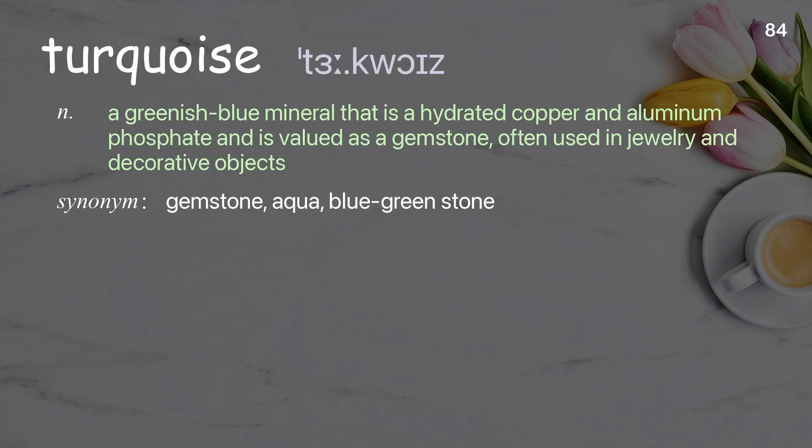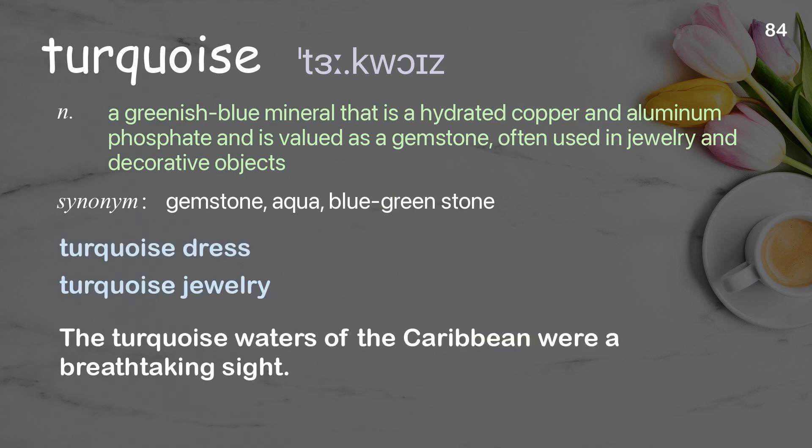Turquoise. A greenish-blue mineral that is a hydrated copper and aluminum phosphate and is valued as a gemstone, often used in jewelry and decorative objects. Examples: Turquoise dress. Turquoise jewelry. The turquoise waters of the Caribbean were a breathtaking sight.